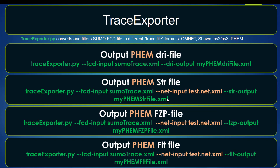What is important to notice here is that, unlike the DRI file, for the STR, FZP, and FLT, we must specify the network input file in order to generate those other files.